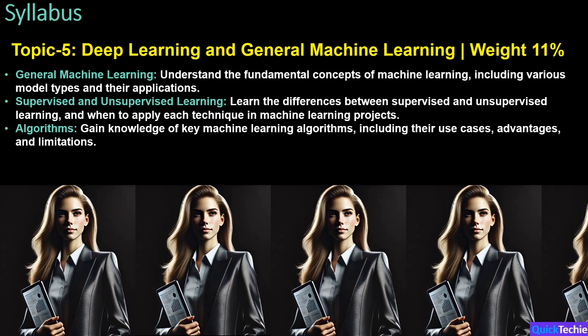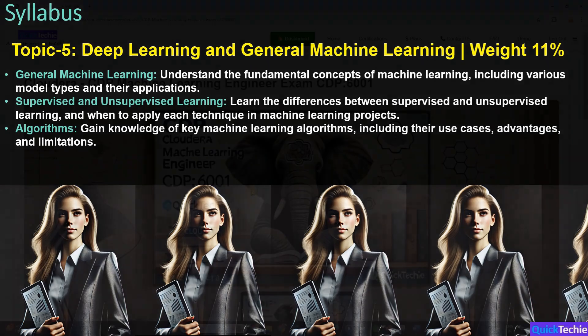Topic 5 covers deep learning and general machine learning, which makes up 11% of the exam. You'll need a good grasp of general machine learning basics and how models work. Next, focus on supervised and unsupervised learning — you should know when to apply these techniques and how they differ. Lastly, familiarize yourself with key algorithms, their strengths, weaknesses, and real-world use cases. Although this section has an 11% weight, it is essential for a well-rounded understanding of machine learning concepts.